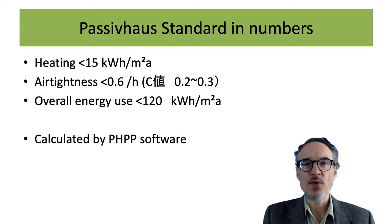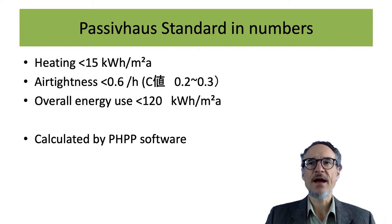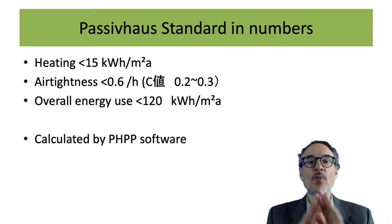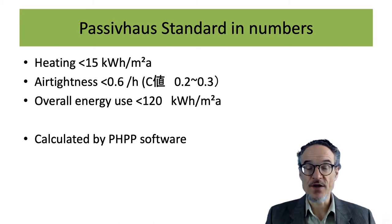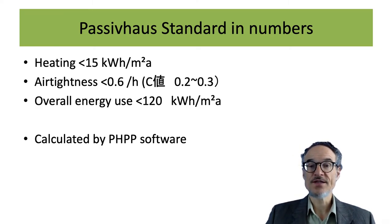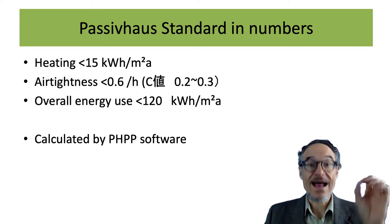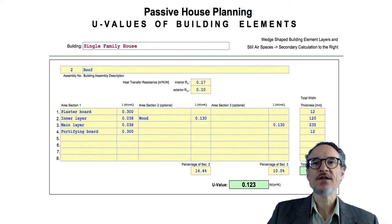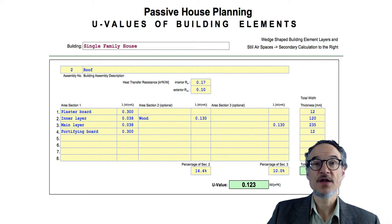This is calculated by what's called PHPP software, which is basically a large Excel file where you put in data on your house: how big are the walls, how big are the windows, where are the windows, what insulation materials are you using in the walls, floor, and roof, and what is the U-value of your windows. For example, data being added for a wall might include plasterboard, an inner layer of insulation with structural wood as well as an insulation layer. The software will then work out the energy load of your house.